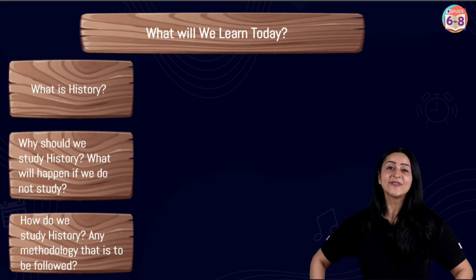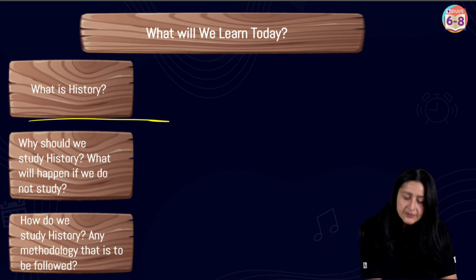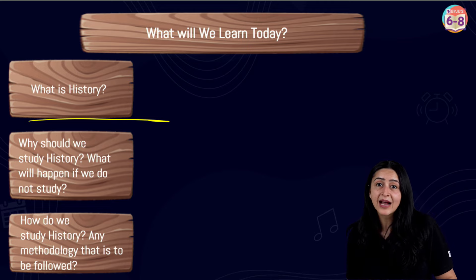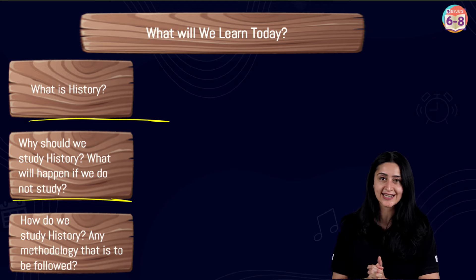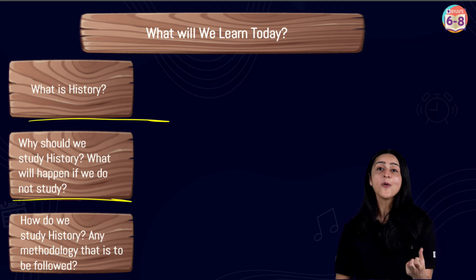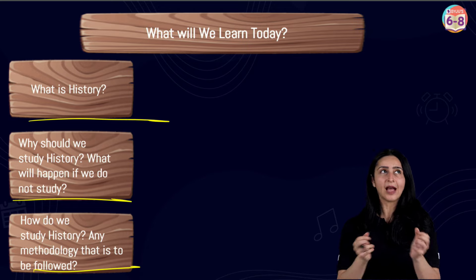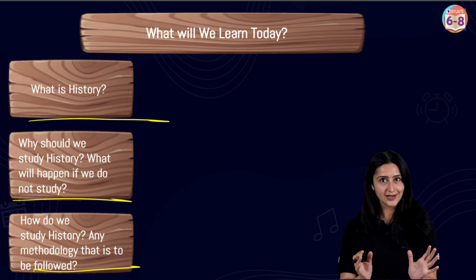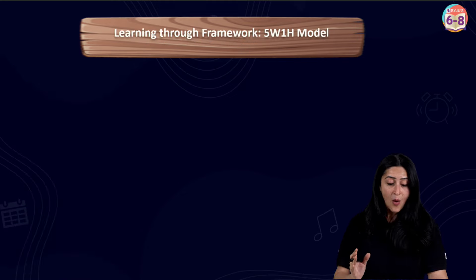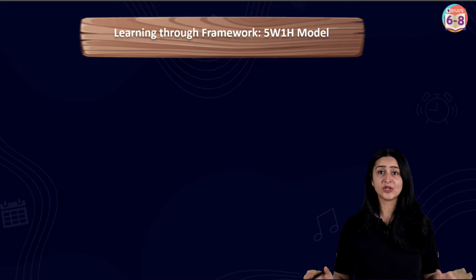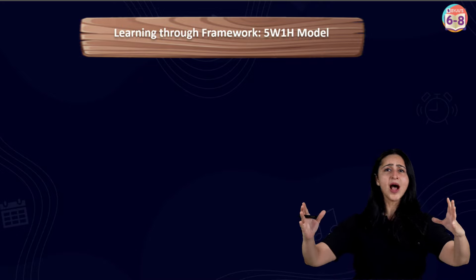Today in this first part of 'How, When and Where,' we will be studying what history is, why we should study history and what will happen if we do not, and how we study history — including whether there is any methodology to be followed for better understanding. I'm very excited about this because one of the best ways to study this chapter is through the 5W1H framework.